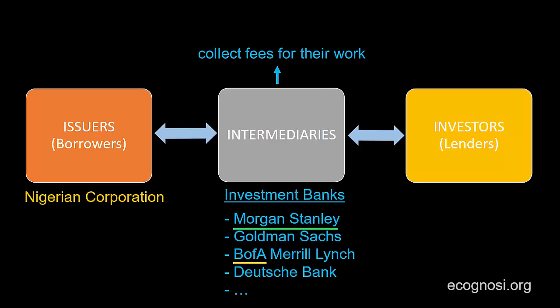Morgan Stanley's tasks can involve a number of things. For example, it will run an analysis to determine the demand for the bonds to be issued, and that demand will form the basis for the initial price of the bonds. If everything goes according to plan, once the bonds are issued by Morgan Stanley on behalf of the Nigerian corporation, they will be sold to investors, who are effectively the corporation's lenders. Investors will buy the bonds under the expectation that they will receive the promised future payments, and they expect those payments to exceed the initial amount invested so that they get a positive return.